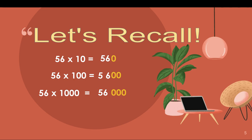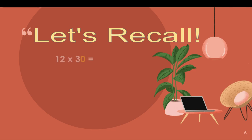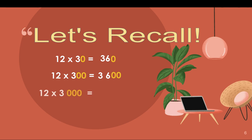Do you see the pattern now? Let's have another example. Let's say we want to multiply 12 times 30. 12 times 30 is the same as 12 times 3 tens. So we focus first on the non-zero: 12 times 3 is 36, and then we append 1 zero at the end. Multiplying 12 by 300 gives us 36 with 2 zeros at the end, so the answer is 3,600. And 12 times 3,000 is 36 with 3 zeros at the end, or simply 36,000.